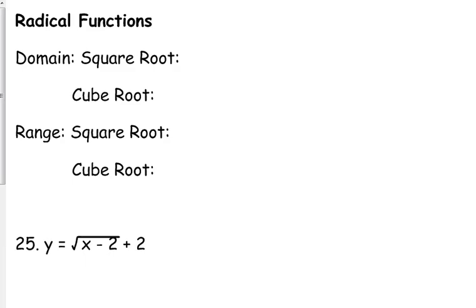Again, when we're talking about the domain, we're looking for where is there an issue if there is an issue. So with square roots, when you're plugging in numbers, you're going to have an issue if what's under the square root is negative. So to figure out your domain for square roots, you take what is under the square root, it's got to be greater than or equal to 0.